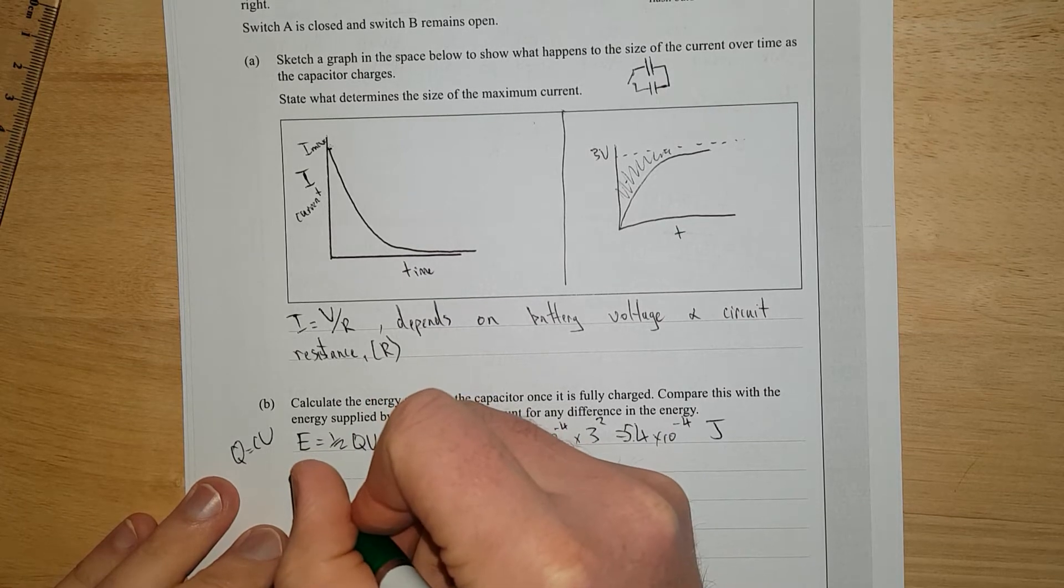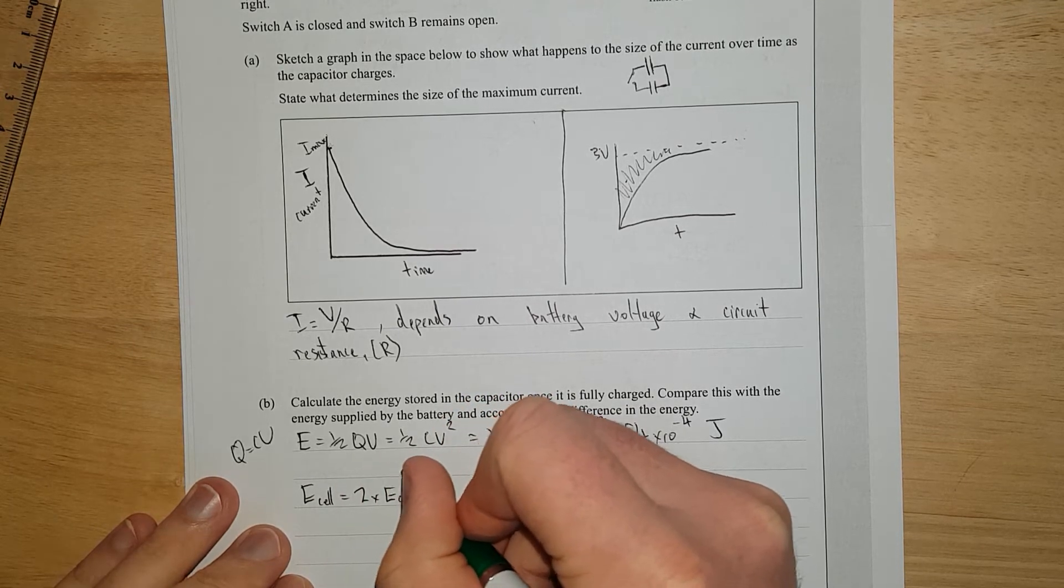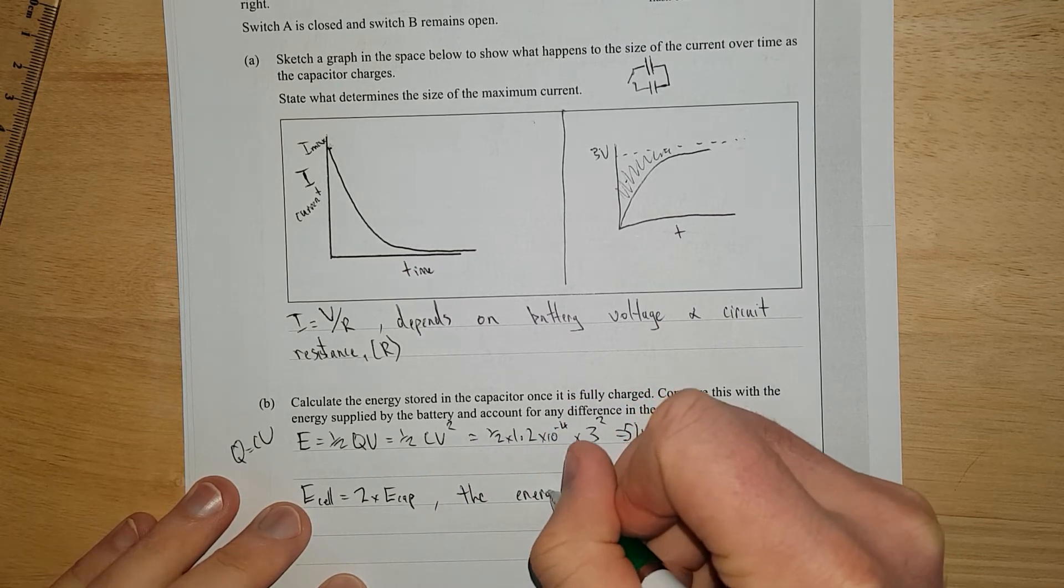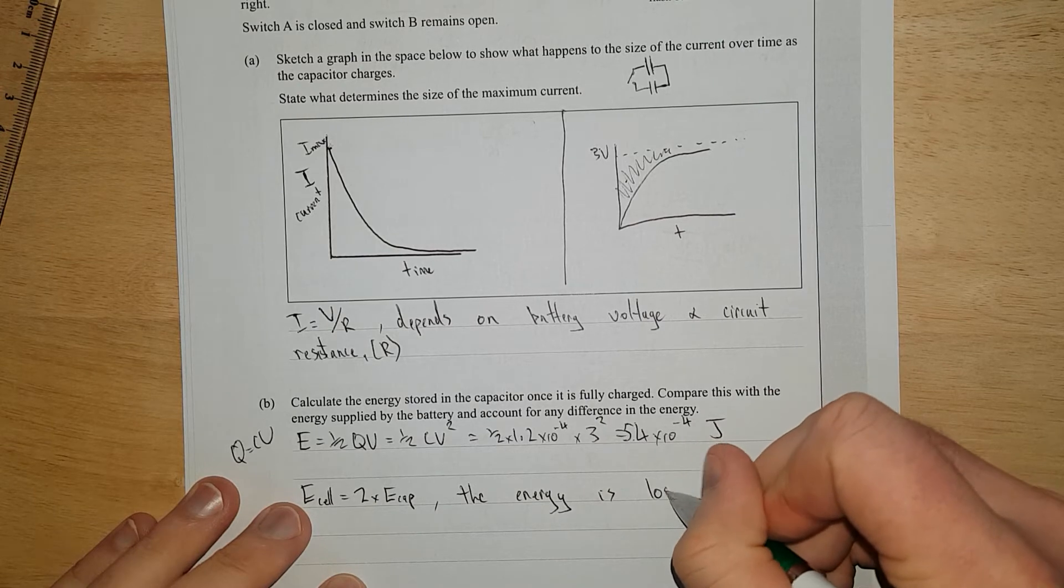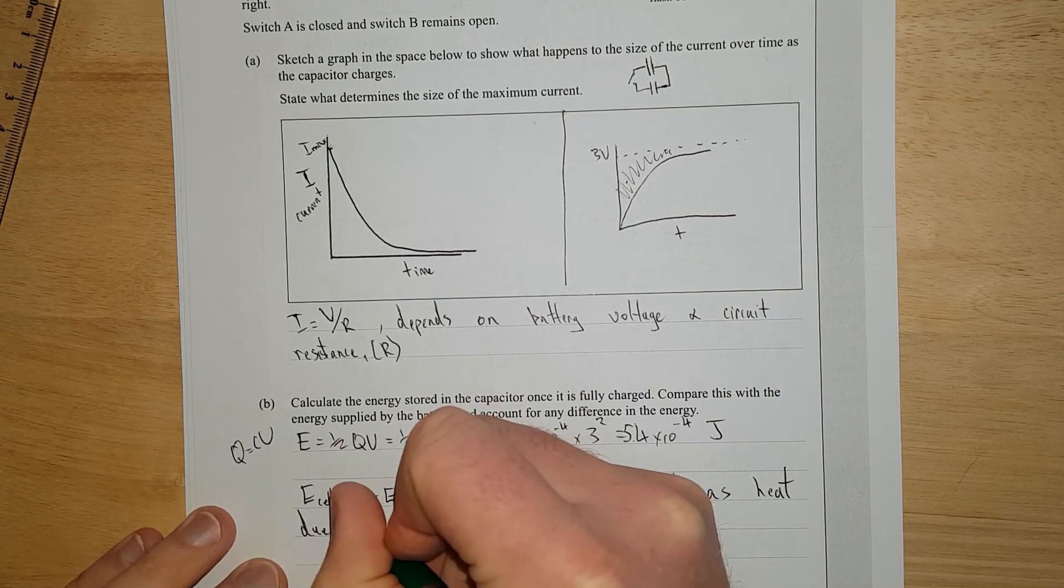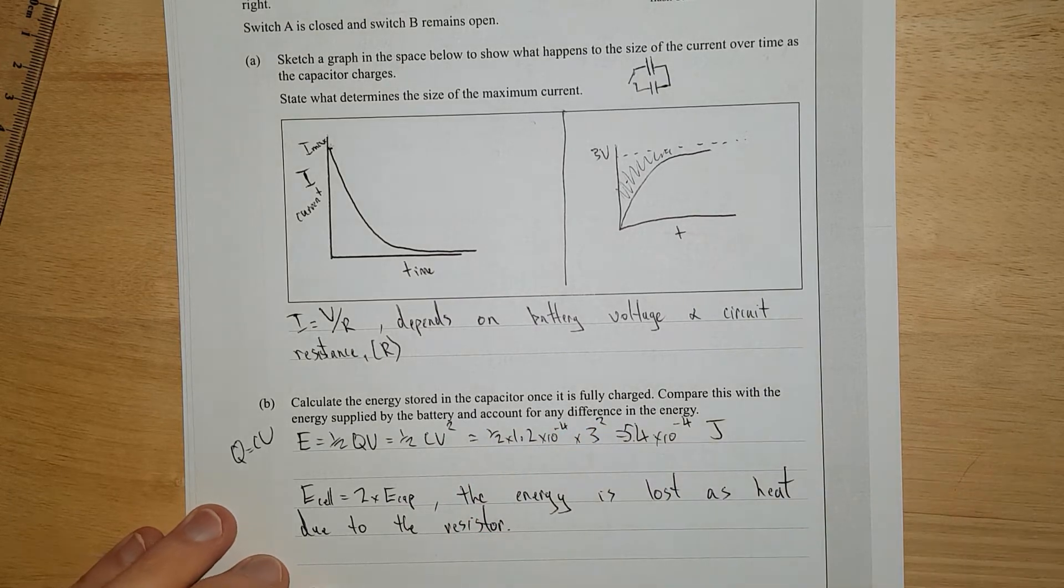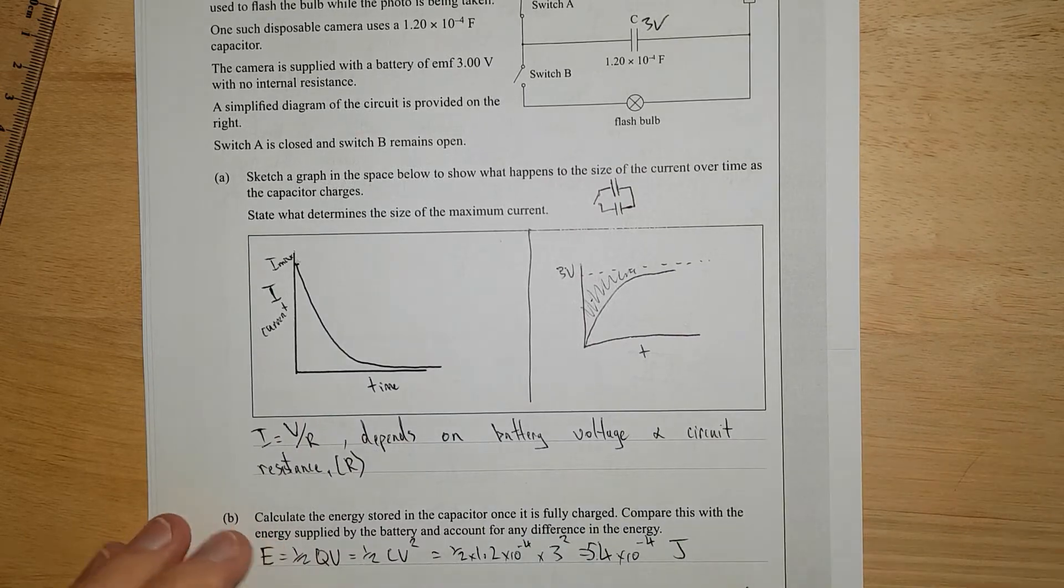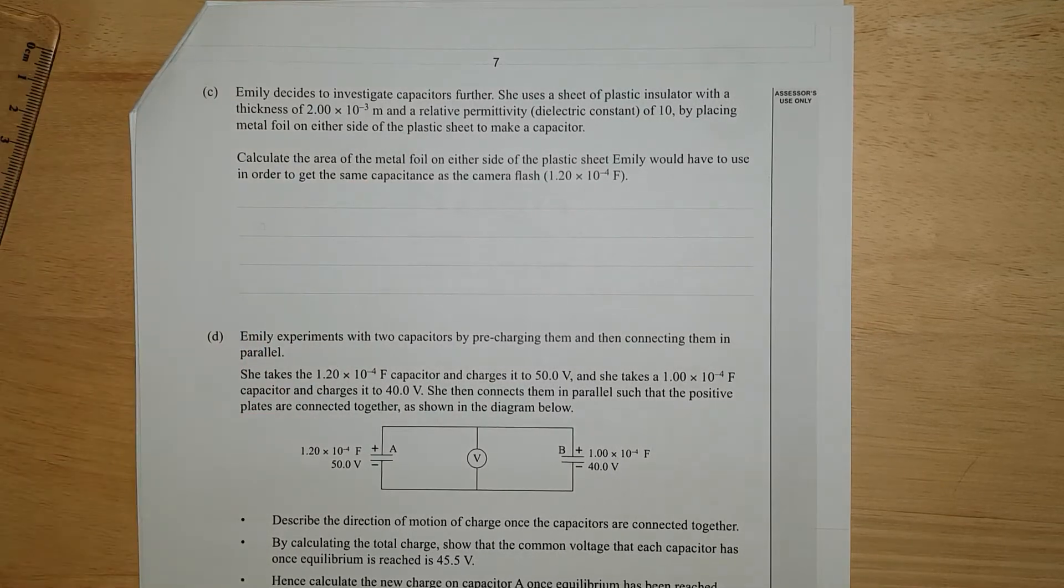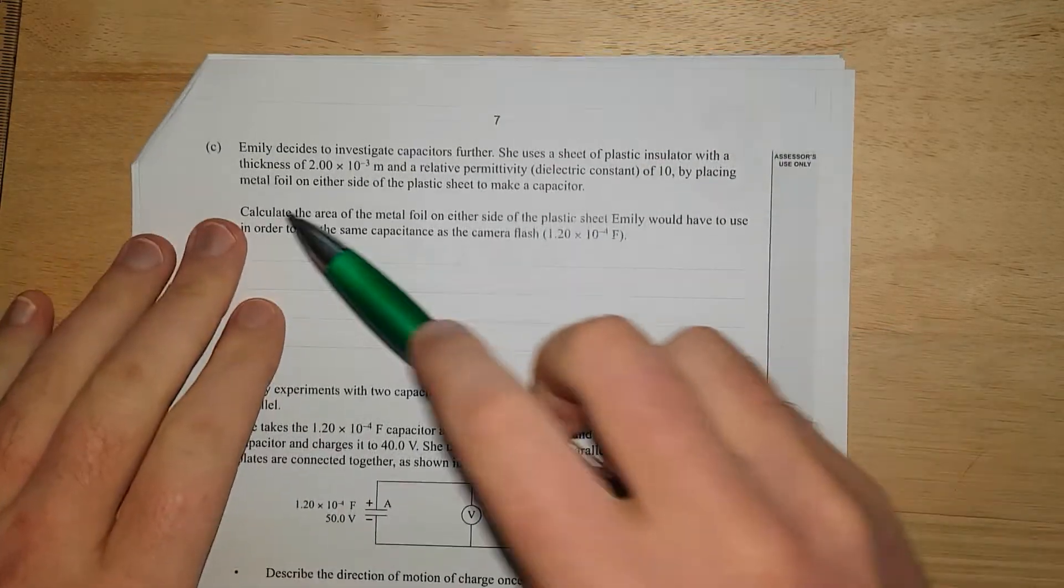So E cell is equal to 2 times E cap. And the energy is lost as heat due to the resistance. We're not going to talk about electromagnetic waves because it's just NCEA. But that's how it works. There's a physics stack exchange answer that goes through this. I think in one of my previous videos I put the link. I don't think I can be bothered to find it.